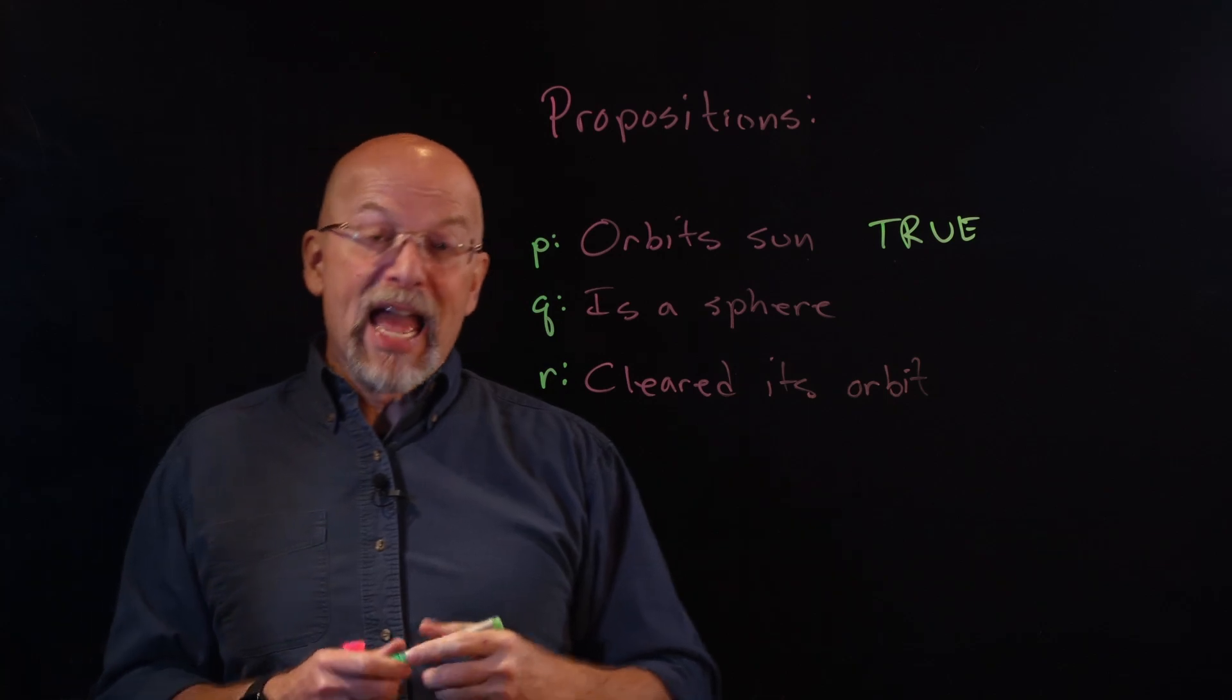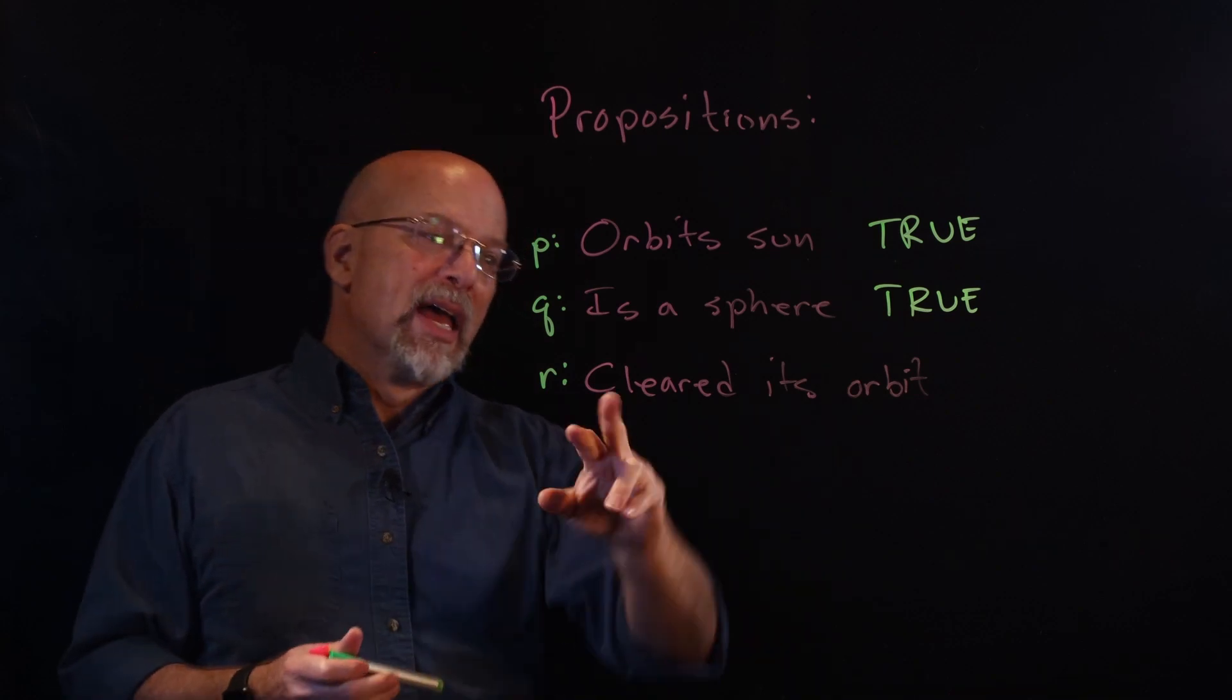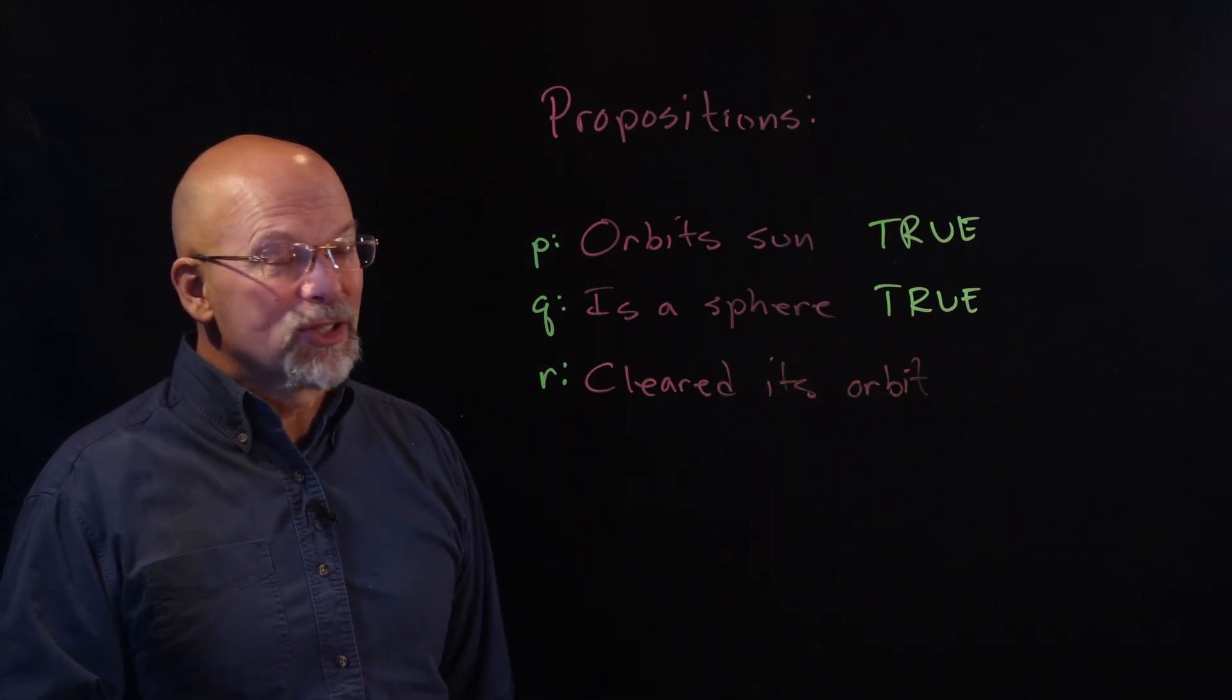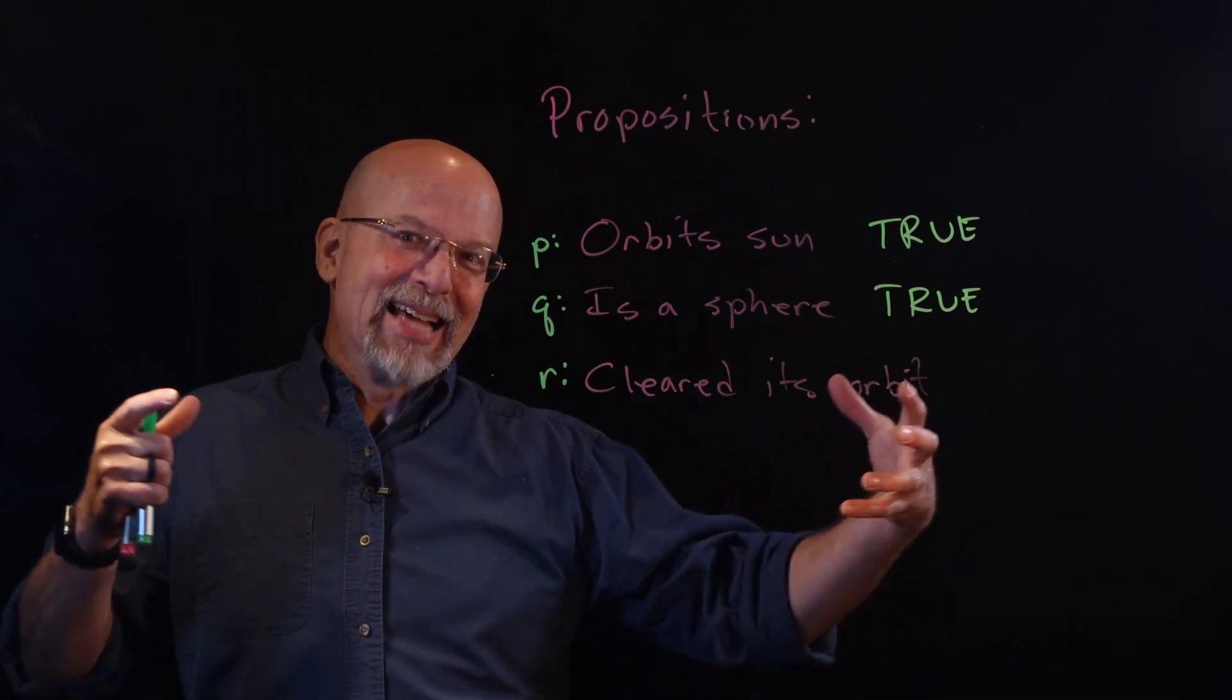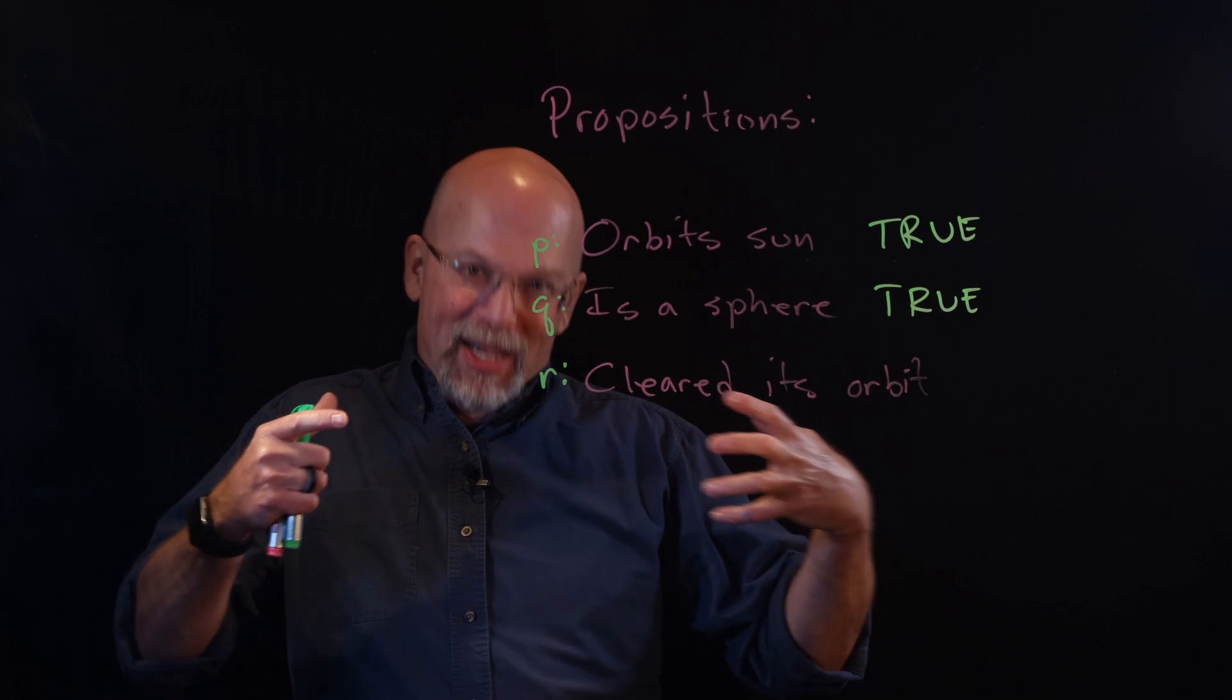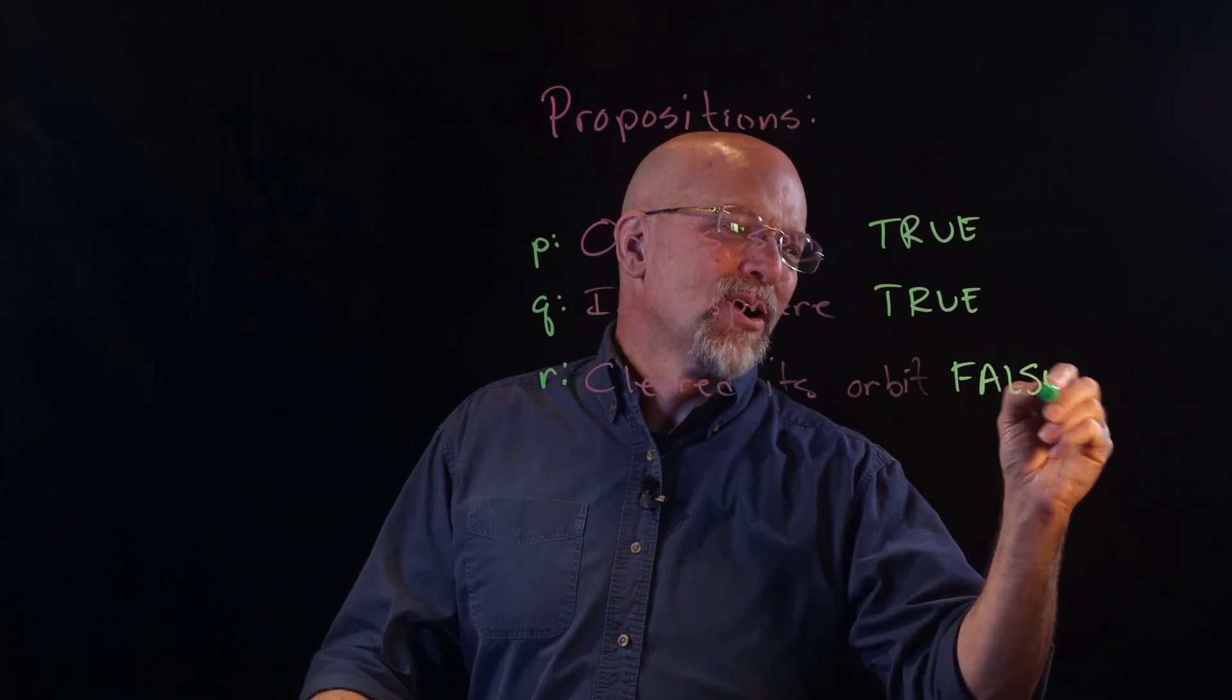Is it a sphere? Yes, it has enough mass so that it is able to assume a spherical shape. Has it cleared its orbit? Turns out there's something in its orbit. Its orbit has Neptune in the way. And the fact that Pluto hasn't actually cleared it, hasn't actually sucked in Neptune in order to clear its orbit, is the reason why it is no longer considered a planet. So this is false.